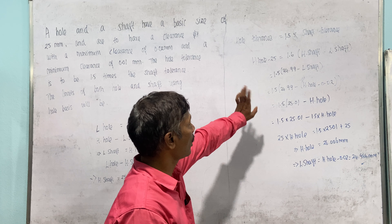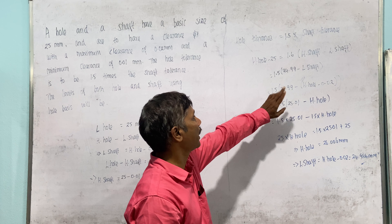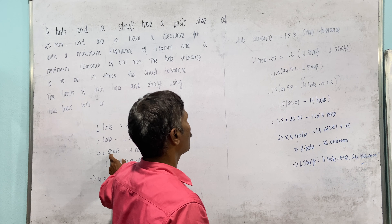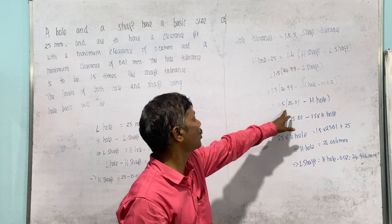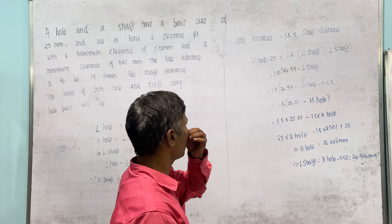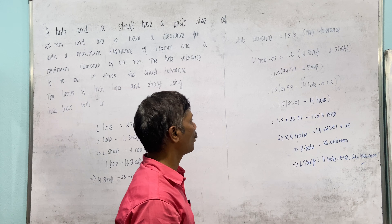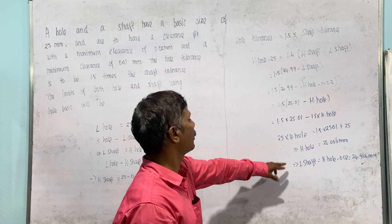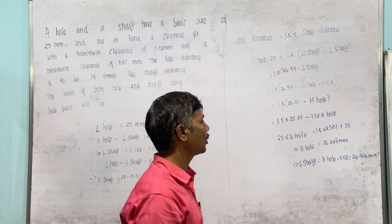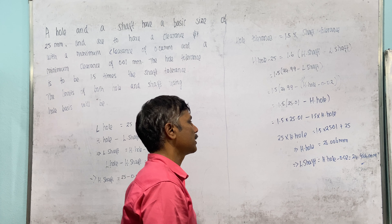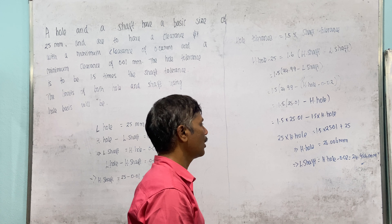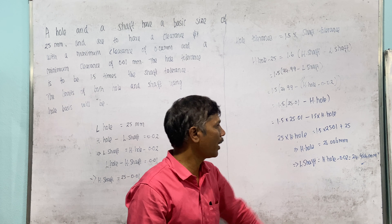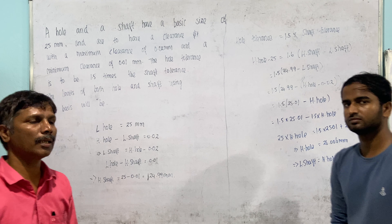Upper limit of hole minus 25 gives the hole tolerance. Upper limit of hole minus 0.02 gives the lower limit of shaft. Substituting 1.5 times: the upper limit of the hole is 25.006mm, and the lower limit of the shaft is 24.986mm.